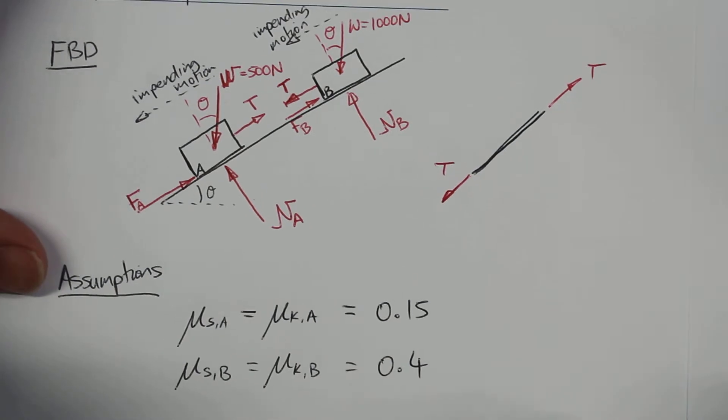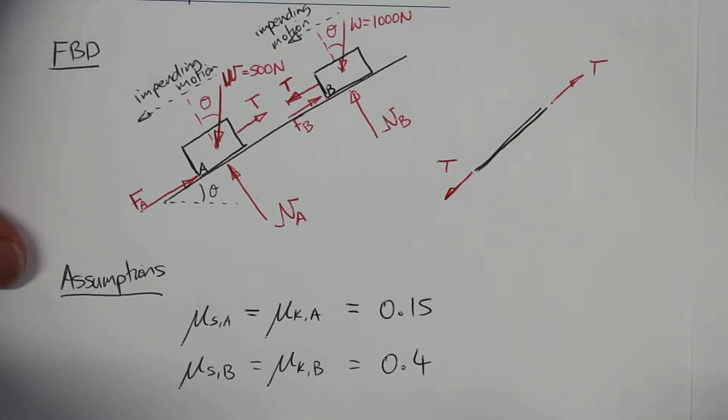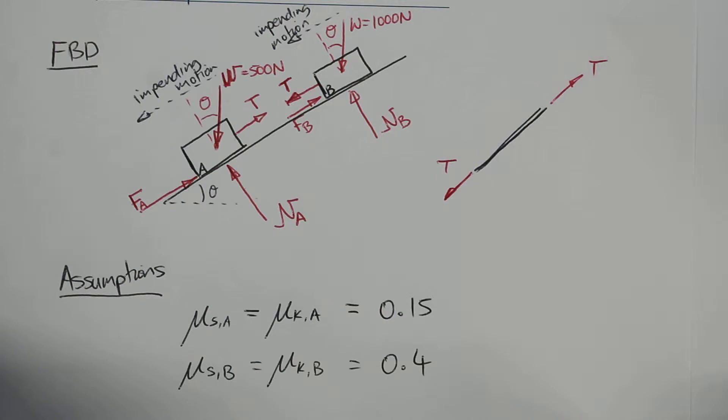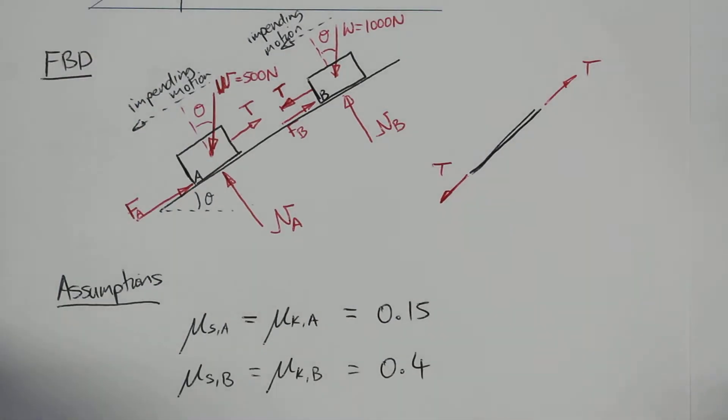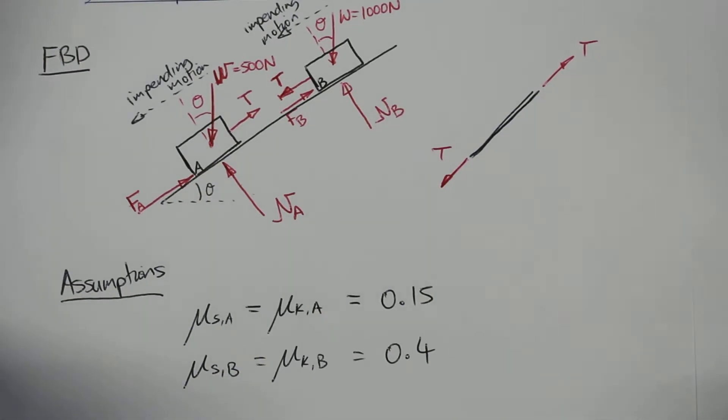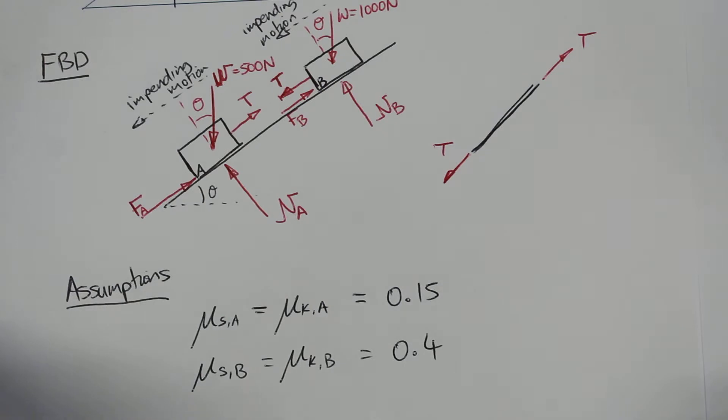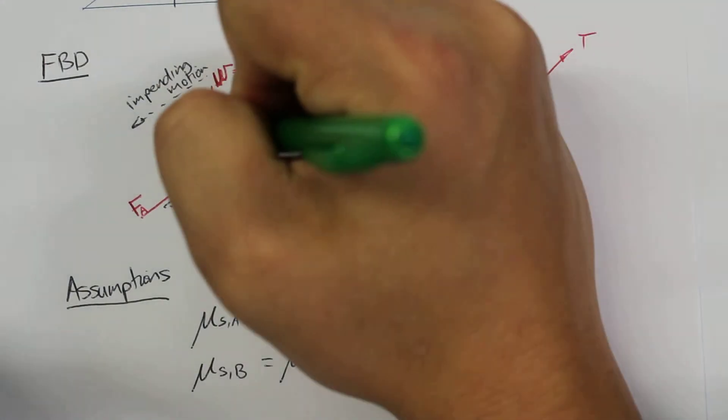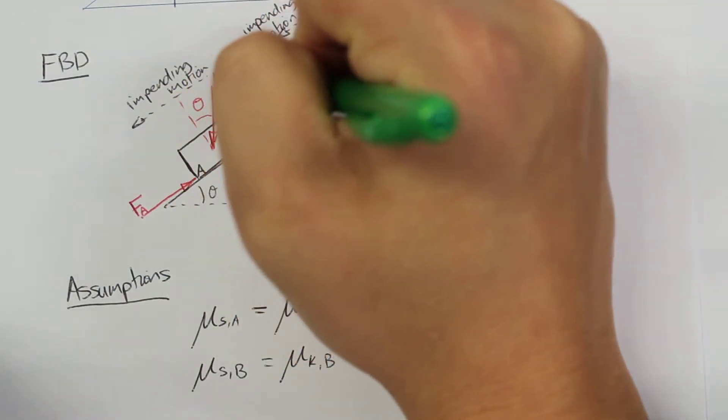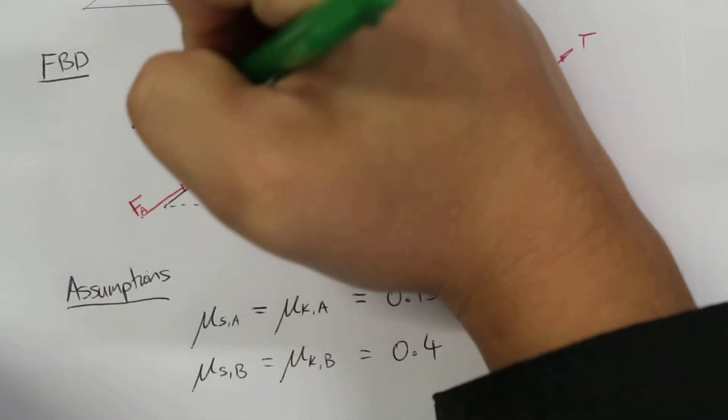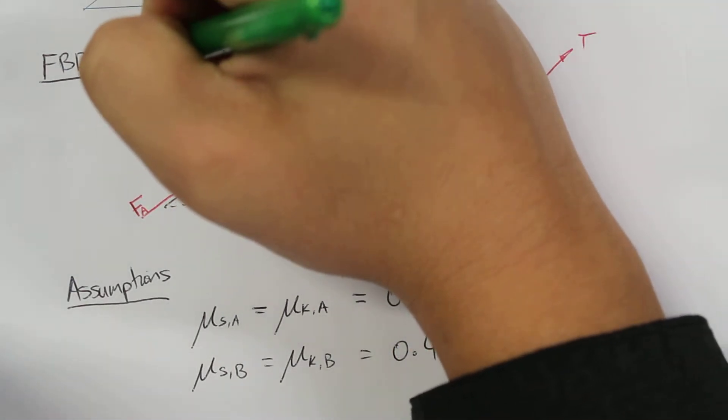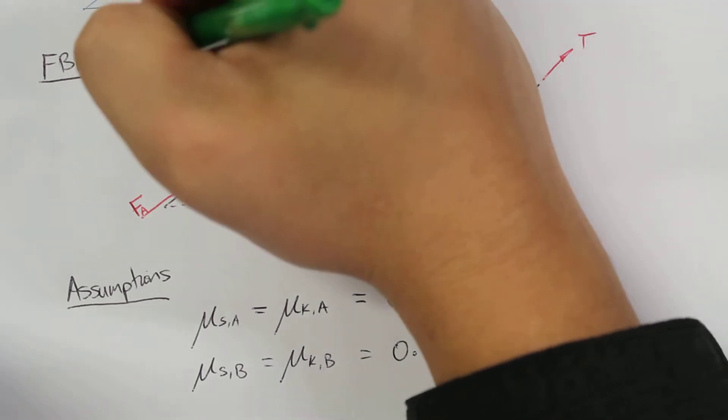So the next thing to do here is to create our equilibrium of forces for each of these two cases. So for the first free body diagram, we can pick the x direction as going up the incline, and the y direction as going perpendicular, so normal to that incline.